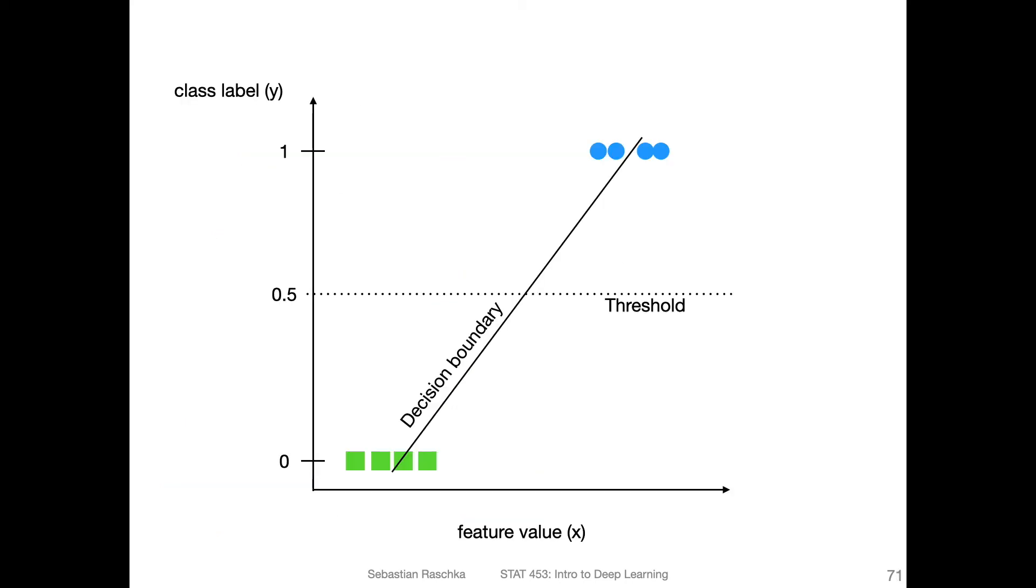Here's just conceptually how it looks like when we fit an ADALINE model. I'm showing you the class label on the y-axis. For binary classification, where we have two class labels of one and zero, I have plotted them here.